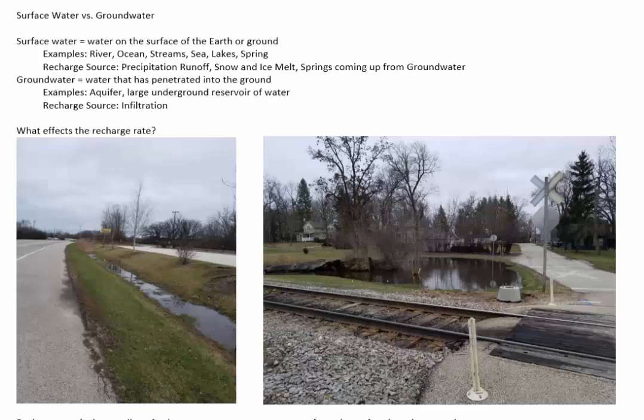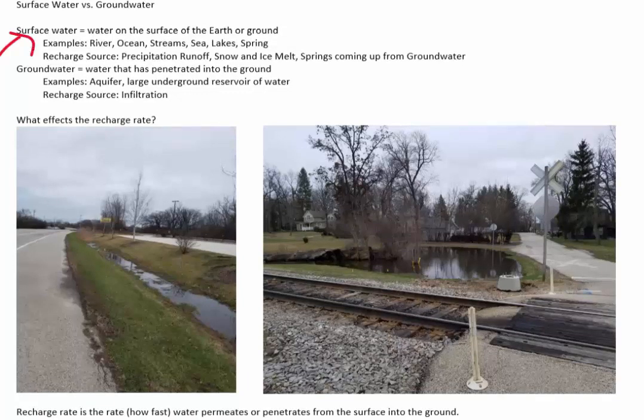So surface water, groundwater. This is not going to be difficult. It's actually really straightforward. Surface water is water that's on the surface of the earth or on the ground. Groundwater is water that has penetrated into the soil, into whatever ground you're standing on, and actually goes down into what we will call the water table or aquifers. We'll get into that in a little bit. But surface water, you can see there's surface water right there. Examples of surface water are rivers, oceans, streams, seas, lakes, springs.